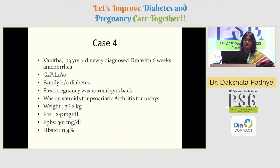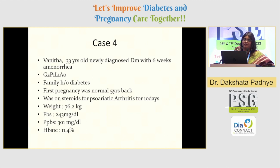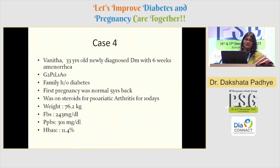Case 4: Newly diagnosed diabetes with six weeks of amenorrhea. One child already, family history of diabetes, and she didn't have diabetes in the previous pregnancy — first pregnancy was normal. She was on steroids for the last two months and sugars were not done. Six weeks after she got pregnant — this pregnancy was not planned. Whenever a patient is a non-diabetic on steroids, sugar should be evaluated before she plans for pregnancy. This is very, very important. Look at the HbA1c: 11.4. She straightaway goes for termination.